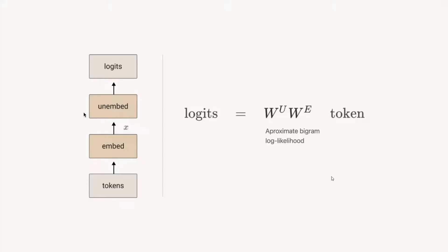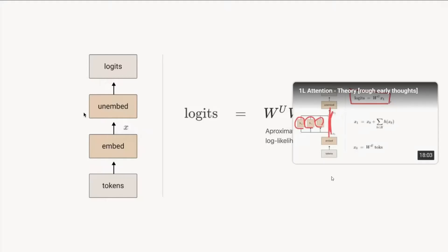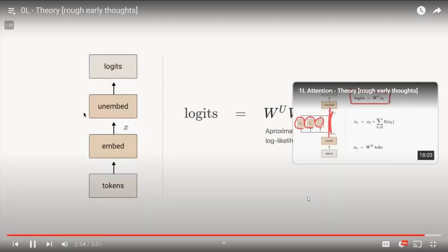That's everything useful on zero-layer transformers, but it's a genuinely useful point: when we look at larger transformers, every overall equation will always have a term that looks exactly like W_U W_E. When we see it, we should suspect it's doing something bigram-statistic-like and think back to the zero-layer transformer. In our next video we'll dive into one-layer attention-only transformers.